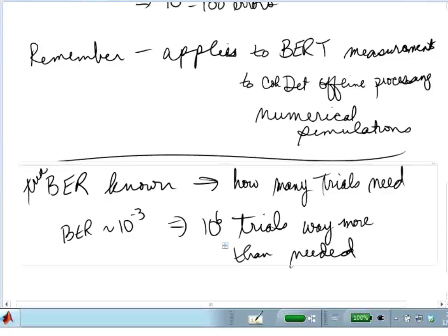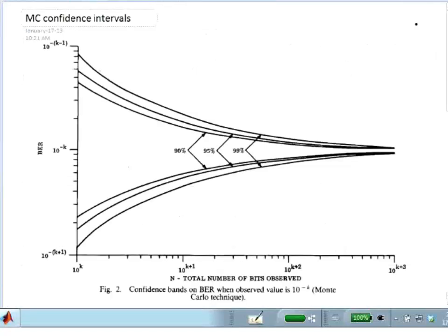And it comes from posing the problem when the true bit error rate is known. This is a paper by Jeruchim, Michel Jeruchim, about analysis of Monte Carlo confidence intervals. And so what you'll see in that paper is these curves. If you look at the curves here, what we're plotting is, in the x-axis, the total number of bits observed, so it's the number of trials in your system.